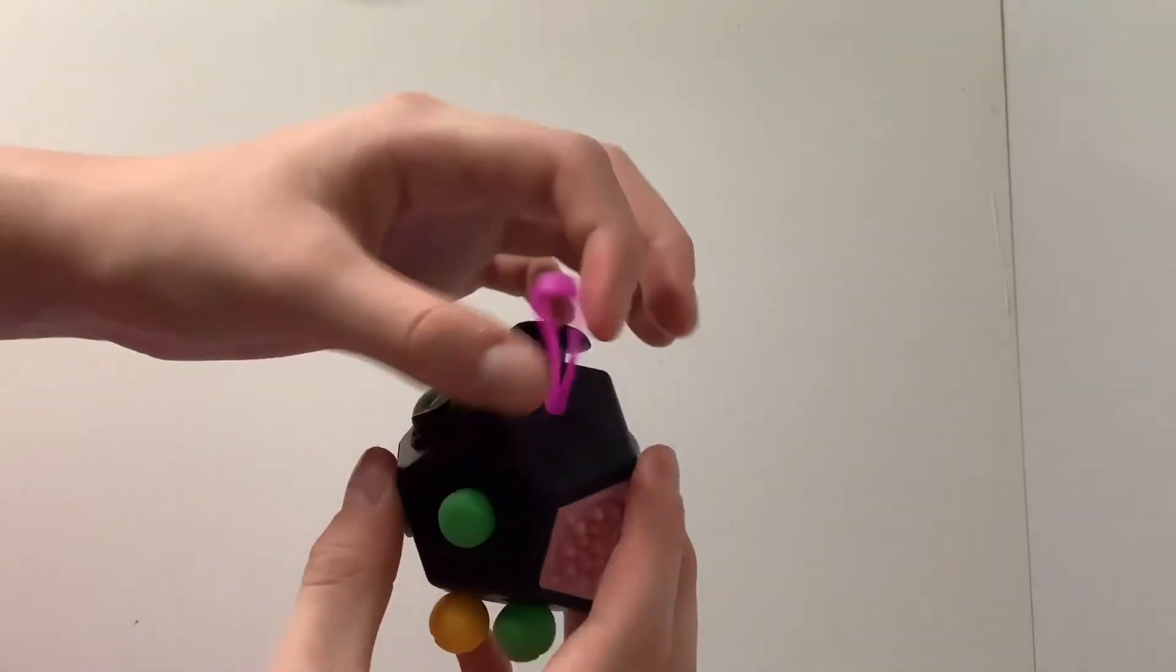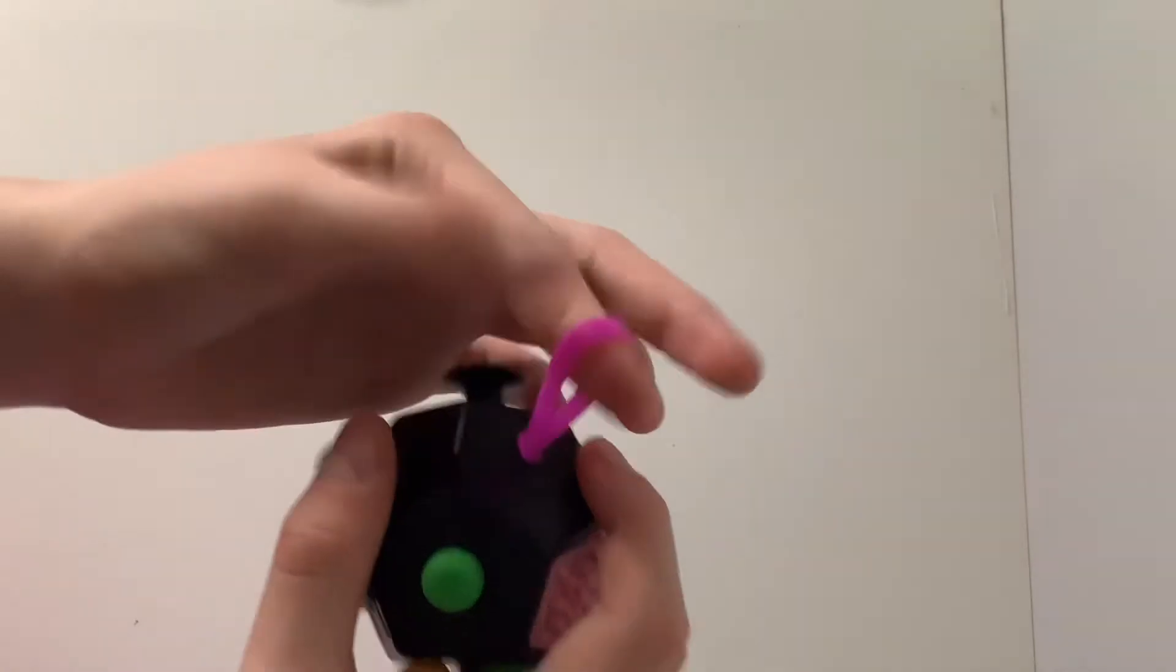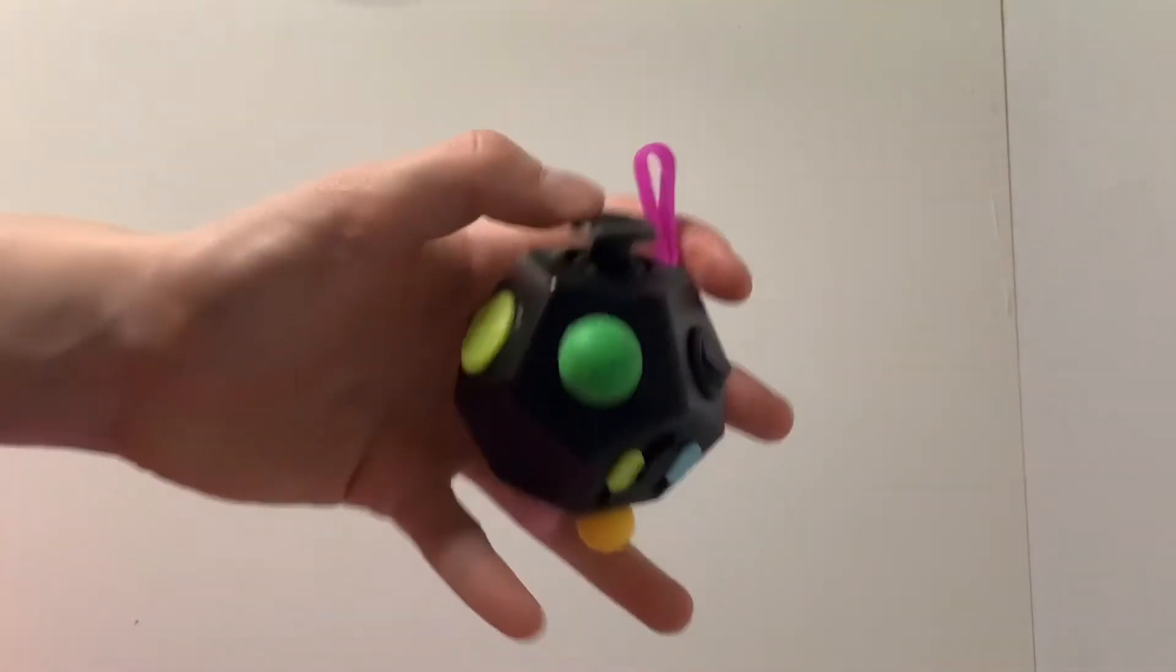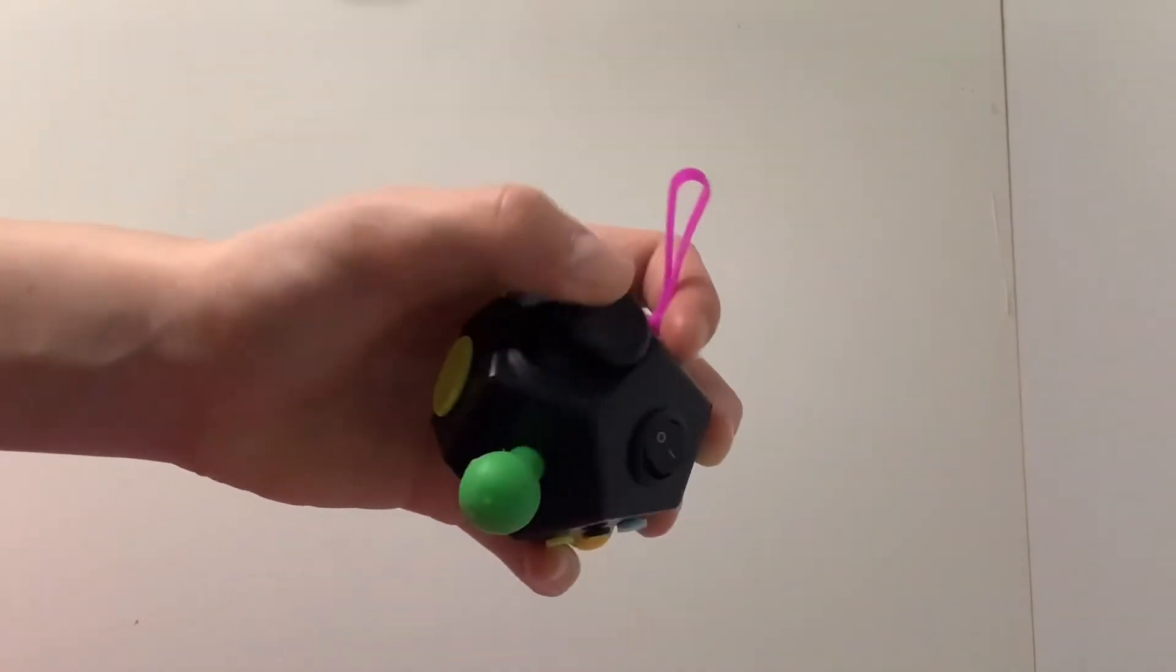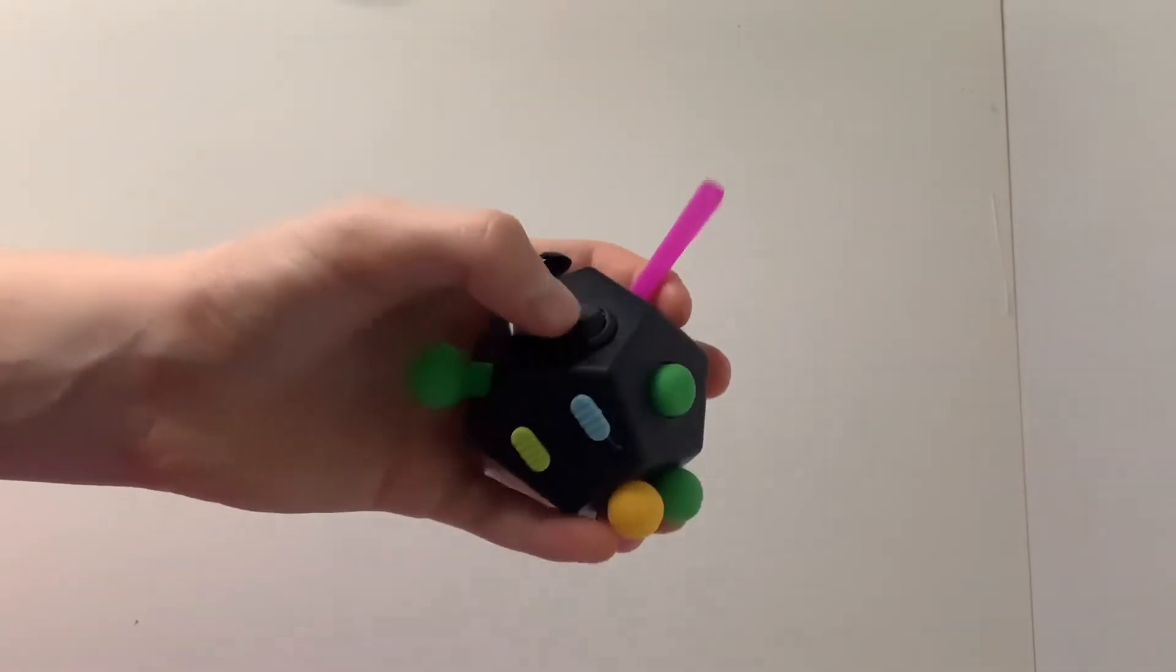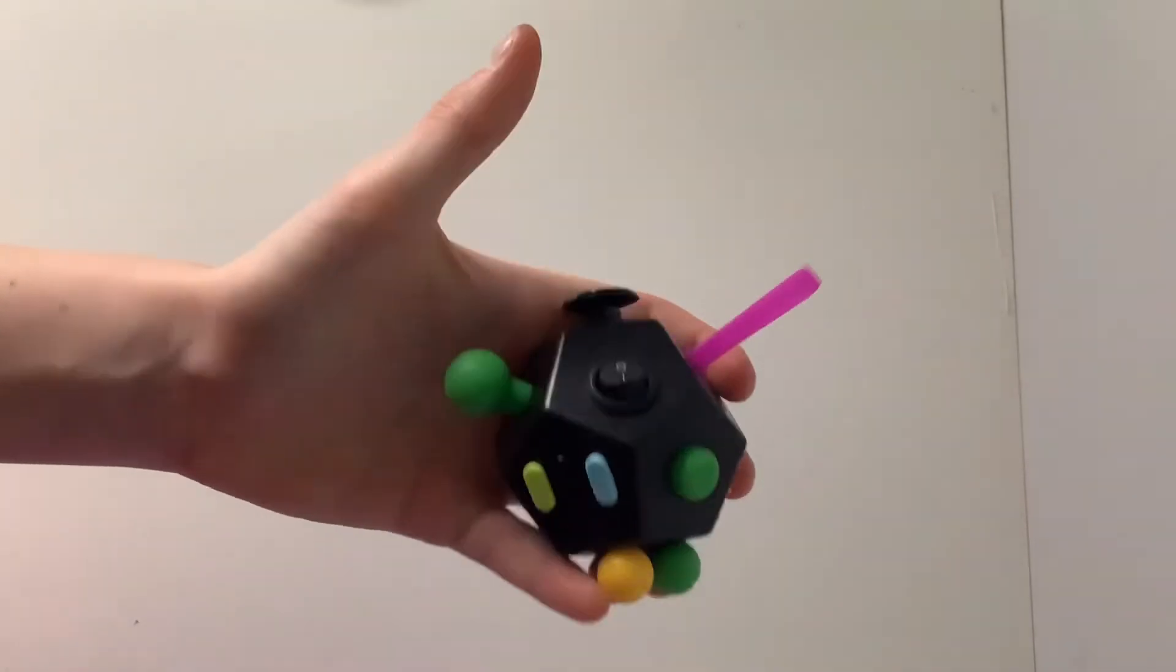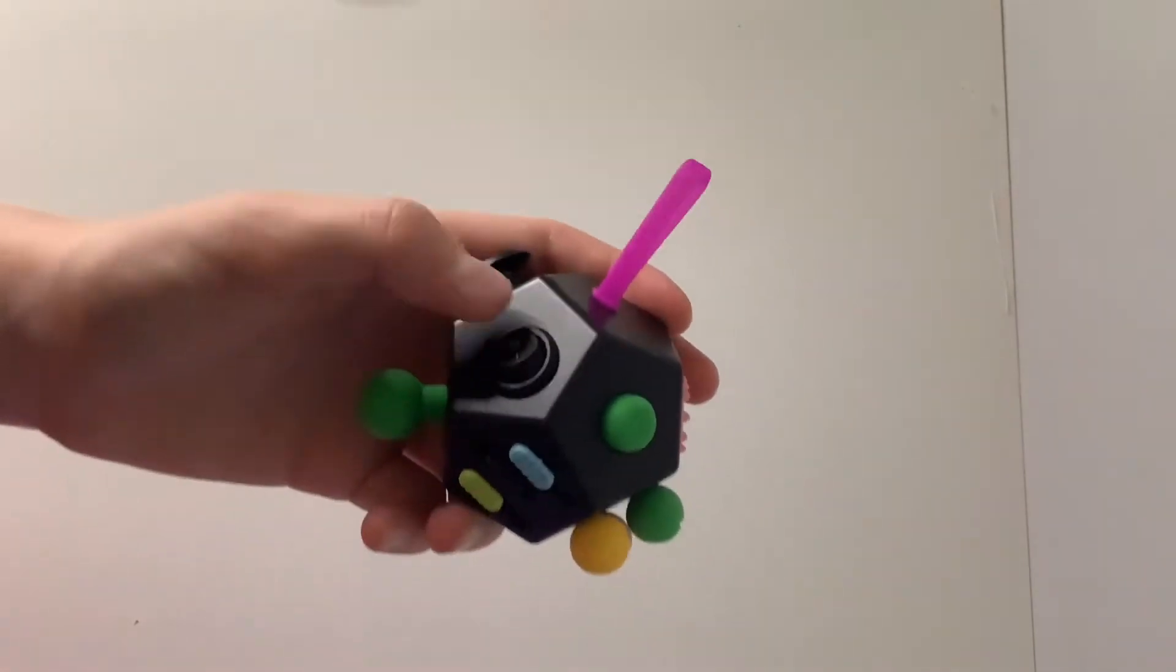Then you have the fidget dodecagon. It has this little thingy, I really don't know but it's fun. It can be pretty fun. Then yet again you have a joystick, then a switch, smaller than the rest but it's still really fun.